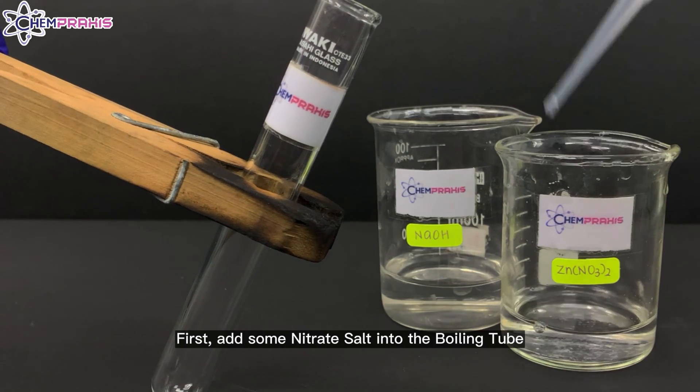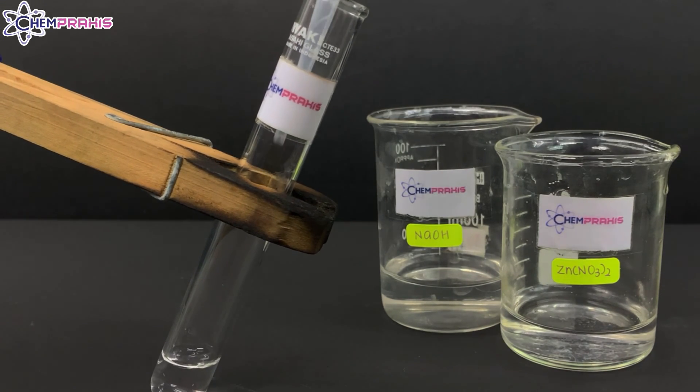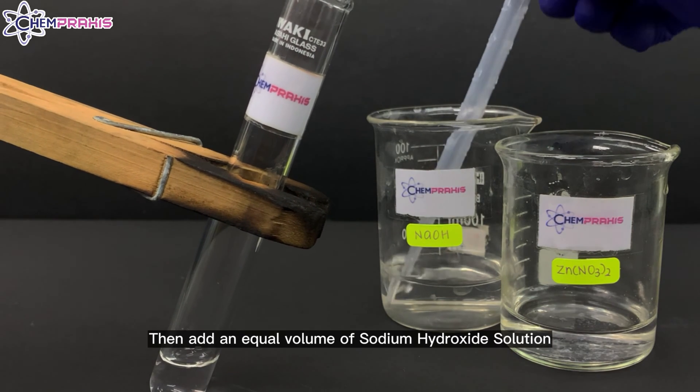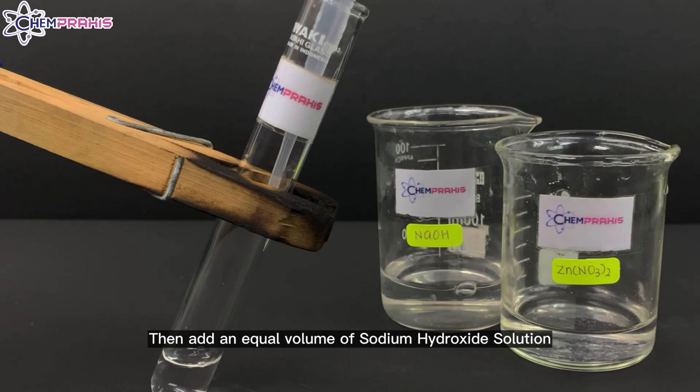First, add some nitrate salt into the boiling tube, then add an equal volume of sodium hydroxide solution.